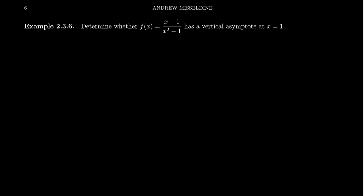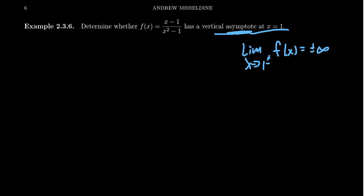Let me show you how this can be used practically. Consider the function f of x equals x minus one over x squared minus one, and determine whether there's a vertical asymptote at x equals one. If you're looking for a vertical asymptote at x equals one, you're trying to determine the limit as x approaches one of f of x. If the left-hand or right-hand limit turns out to be infinity or negative infinity, that means our function has a vertical asymptote. But you can't just plug in x equals one — if you tried that, f of one gives you one minus one over one squared minus one, which gives you zero over zero. Division by zero means evaluation doesn't work here.